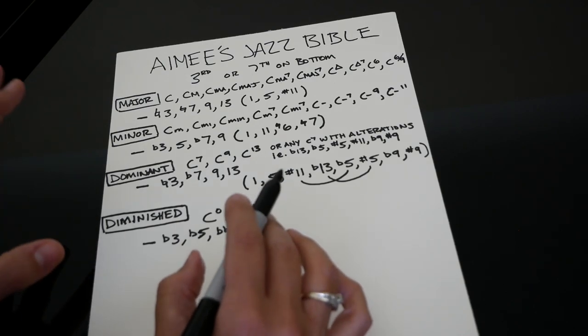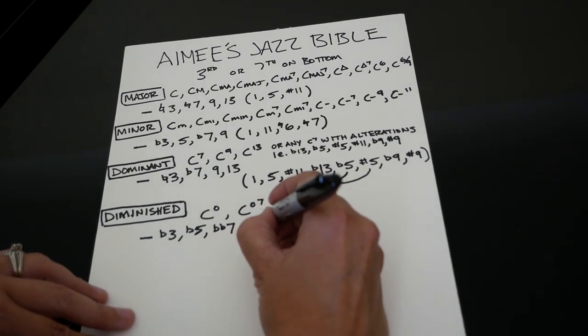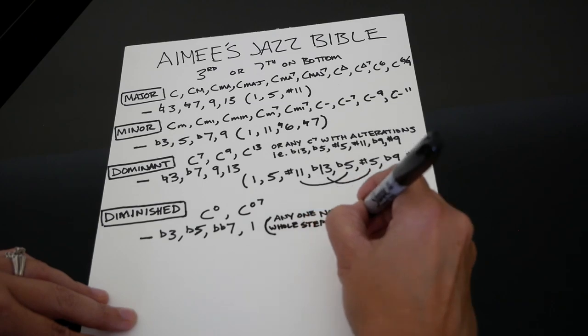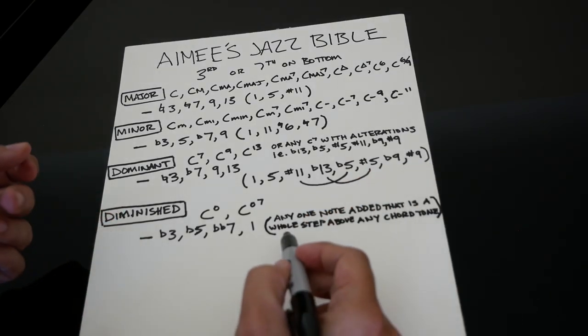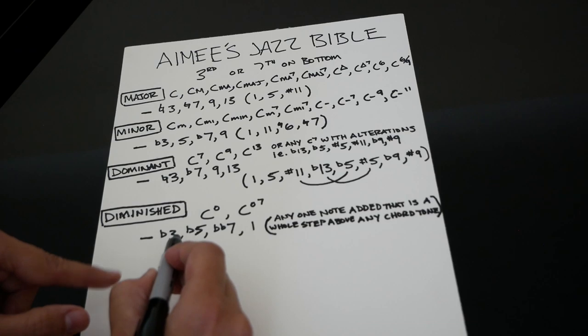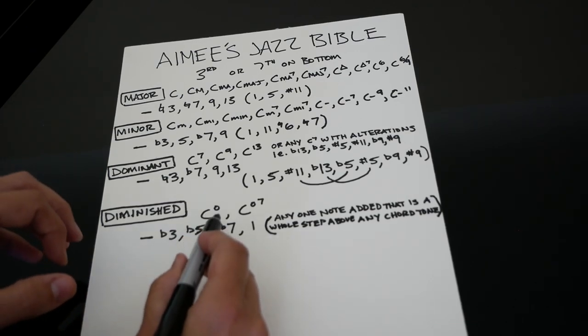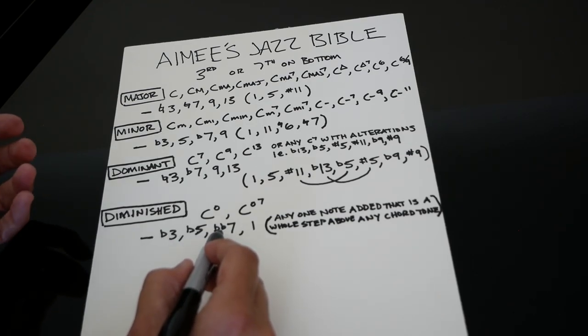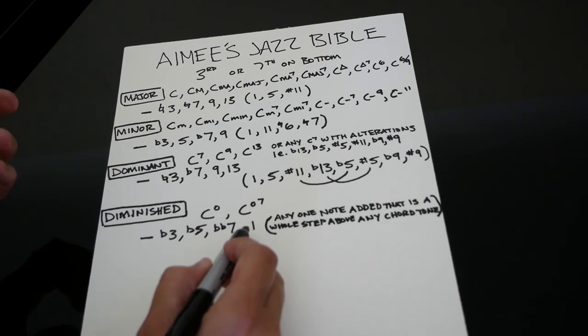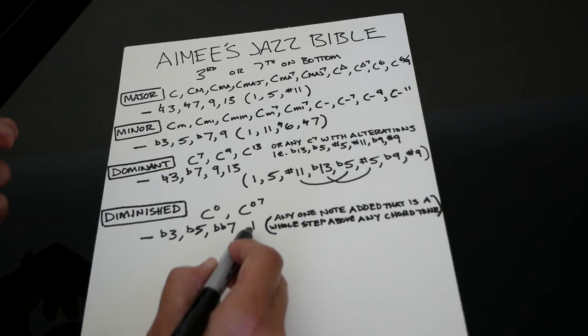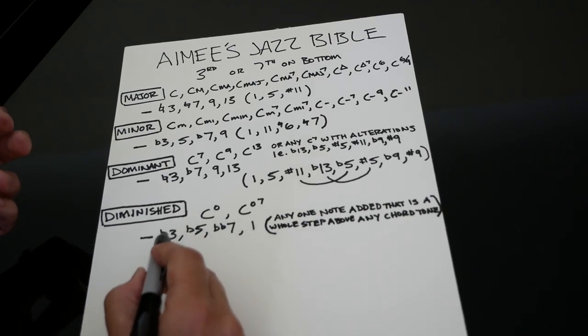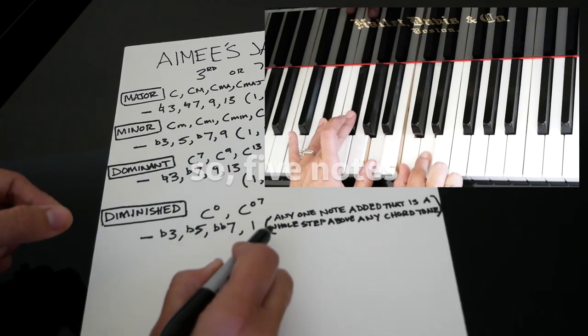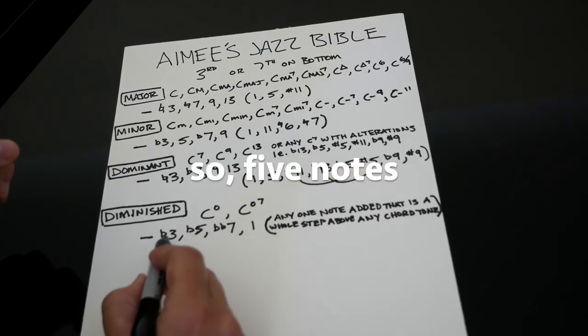The only thing I say to you about adding color tones to diminished chords is this, and I have a whole video about it called Diminished Chords My Favorite Trick: any one note added that is a whole step above any of these chord tones. For instance, if we're playing C diminished or C diminished seventh, we could play E flat, G flat, A or B double flat. The one that's a C, and then we can take this one and on top play a whole step above it in addition to these four notes. So in the end, we've got E flat, G flat, A, C, and D.